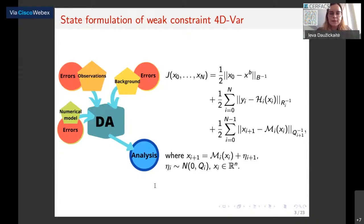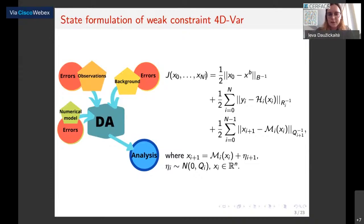In this talk, we will look at the Incremental 4D-Var method, which is a variational one — we have a cost function. Here we're looking for the states over a period of time, and the analysis is given by the minimizer of this cost function.